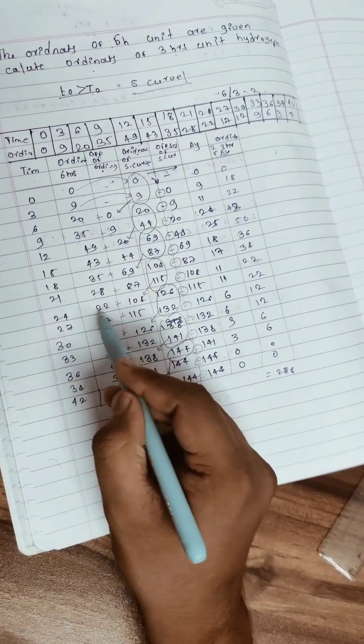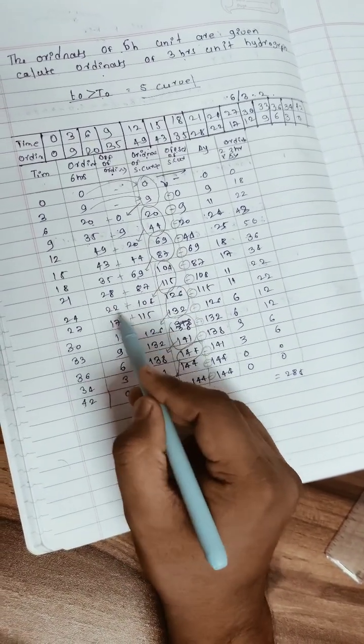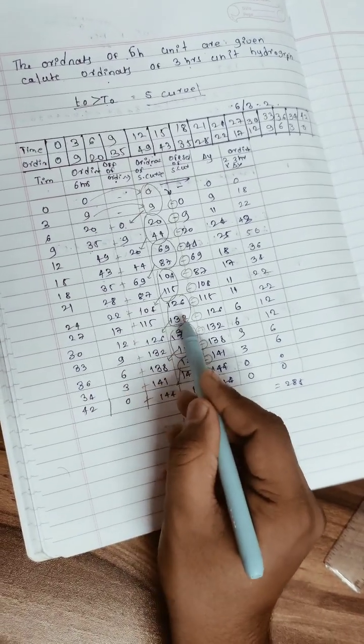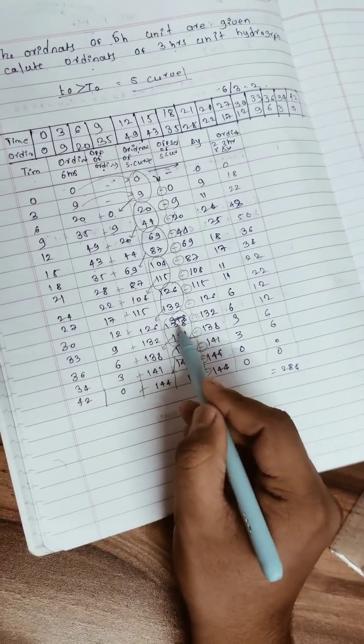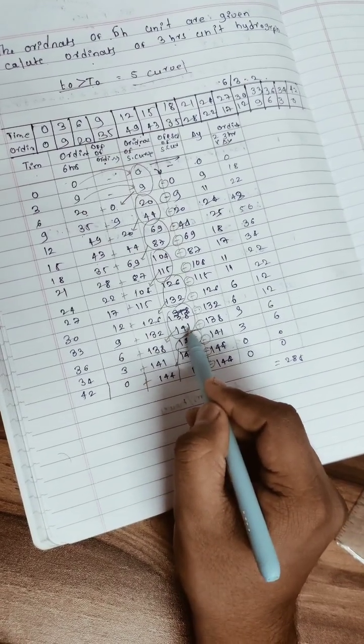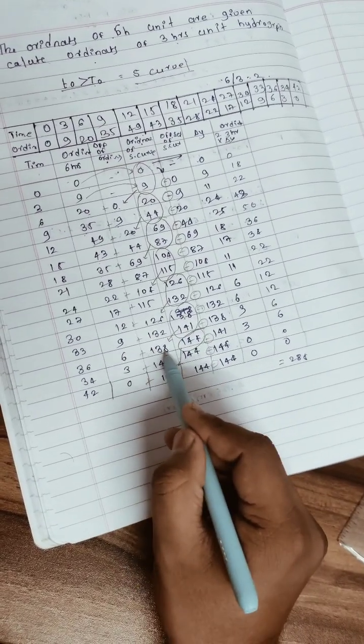12 plus 126 is 138, 9 plus 132 is 141. Then 6 plus 138 is 144, 3 plus 141 is 144, and 0 plus 144 is 144.